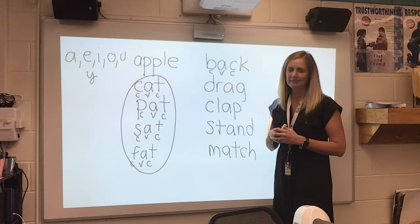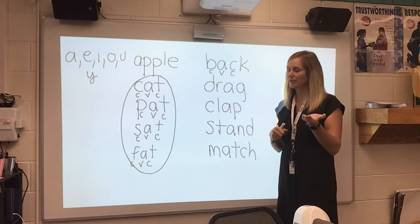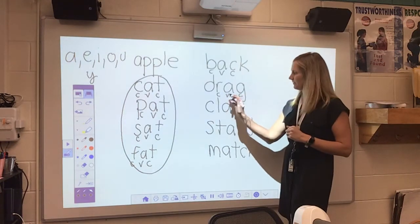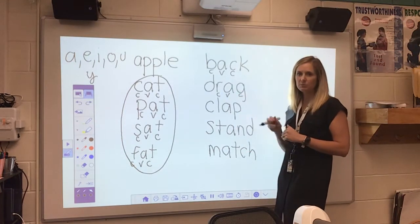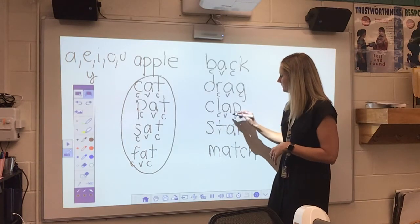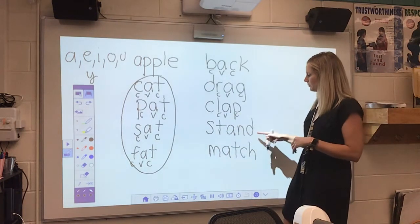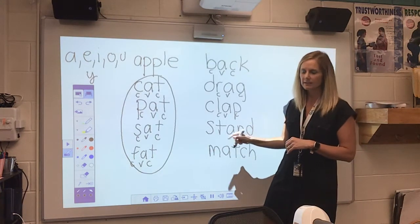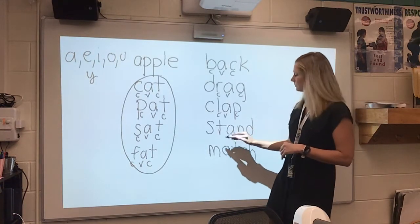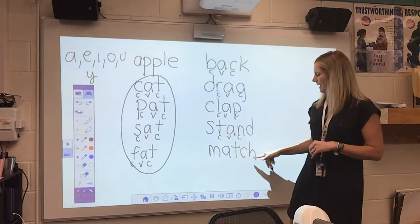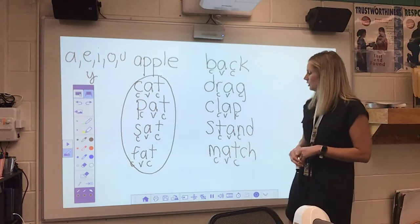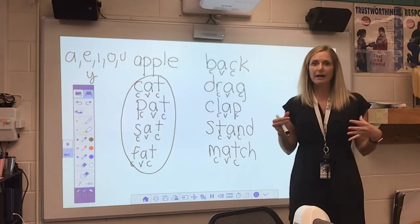'Drag' — that also has that short A sound. I put my hand out for that apple sound. So I have a consonant, vowel, consonant — my vowel sandwiched in between two consonants. 'Clap' — another short A, consonant-vowel-consonant. Here's a big word — let's sound it out: 'stamp.' That's a short A sound too, consonant-vowel-consonant. 'Match' — consonant-vowel-consonant. These are all short A sounds.